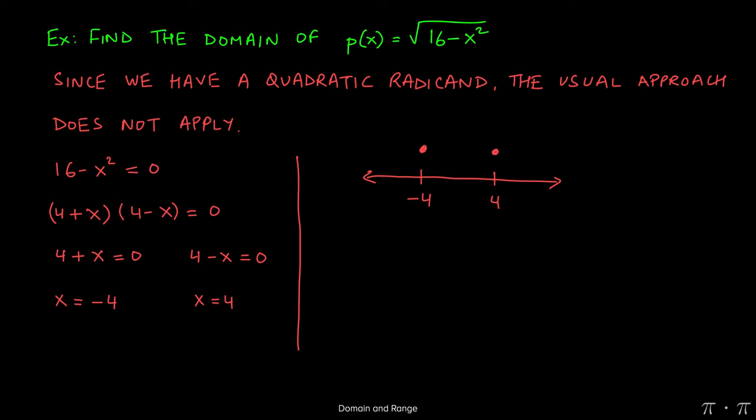Now what we need to do to figure out what else is included in the domain is to figure out for which values of x my radicand is positive. So let's do this by picking numbers in these three intervals. Let's say we pick negative 5. Now we can see that the square root of 4 plus x times 4 minus x is going to yield the square root of negative 9. We cannot find the square root of negative numbers. So we get a sad face here to indicate that none of these numbers will work out.